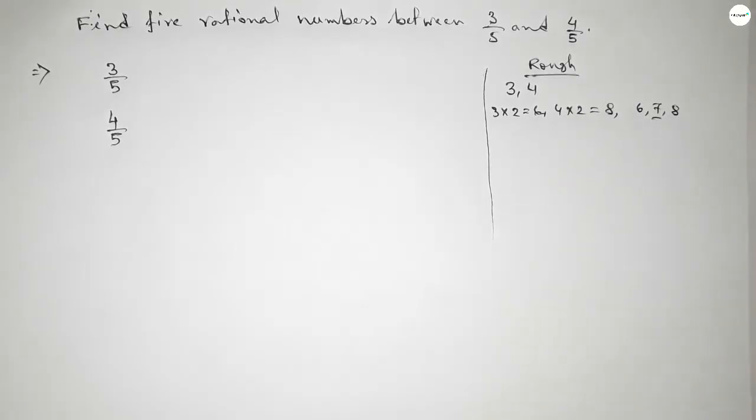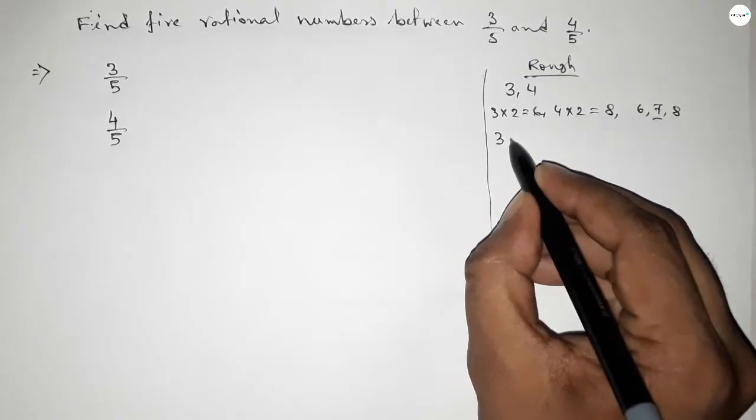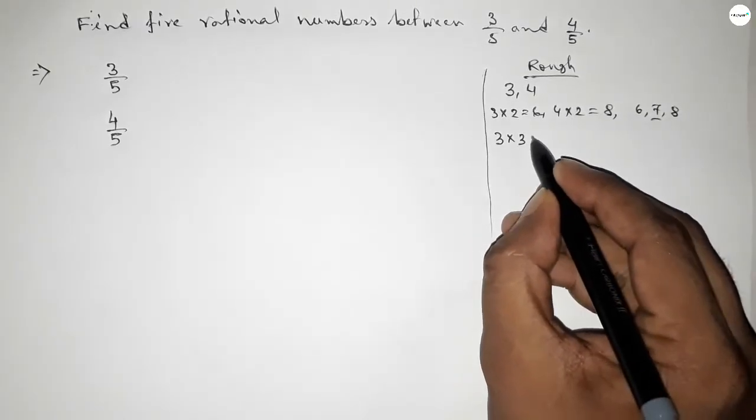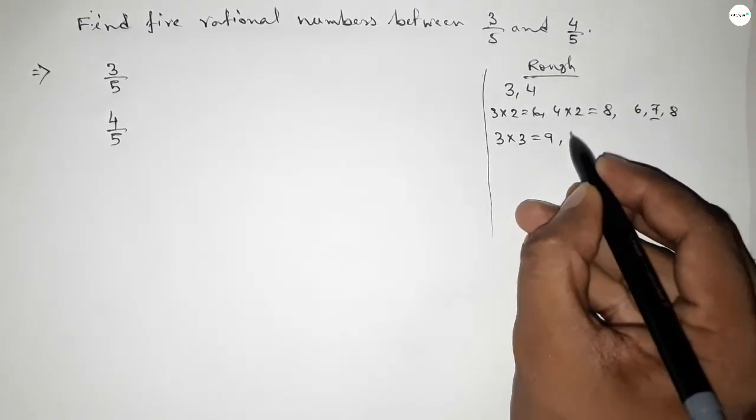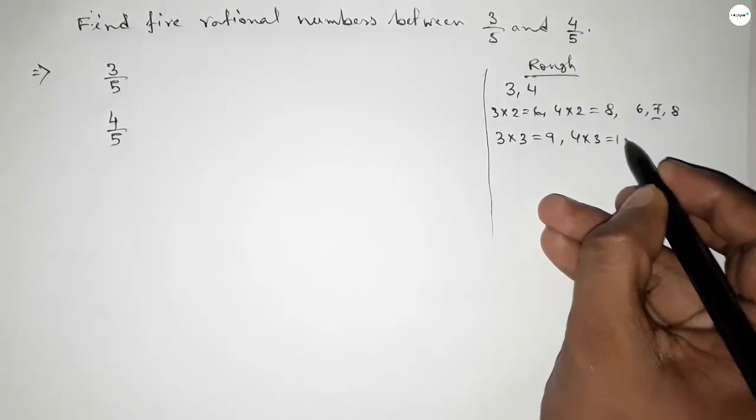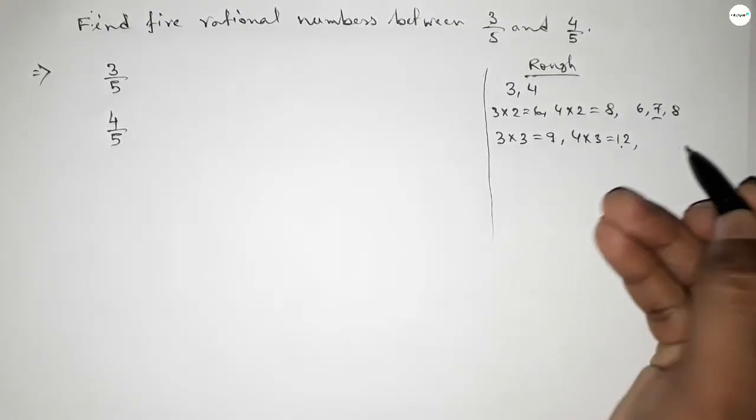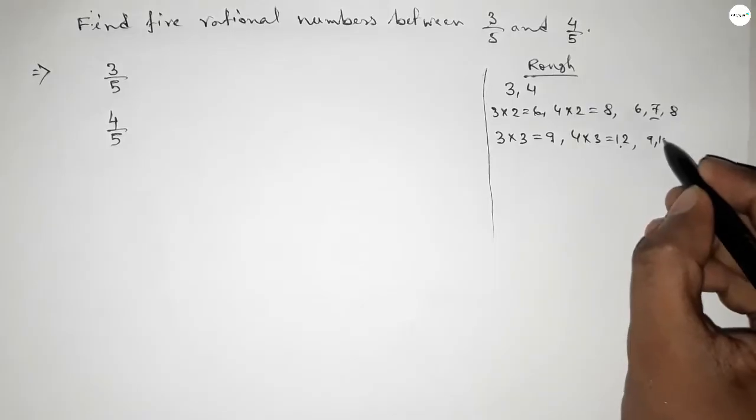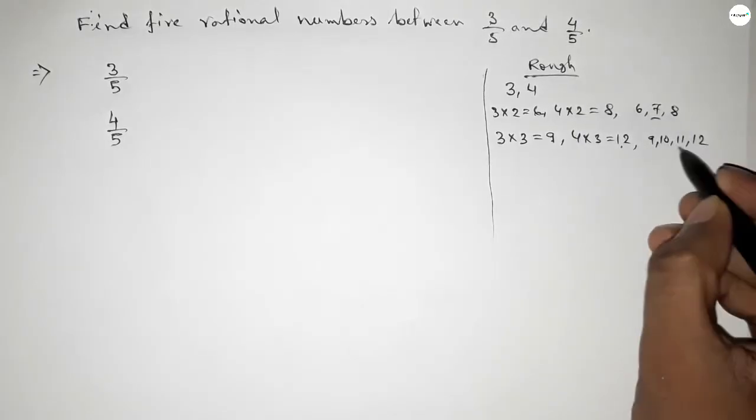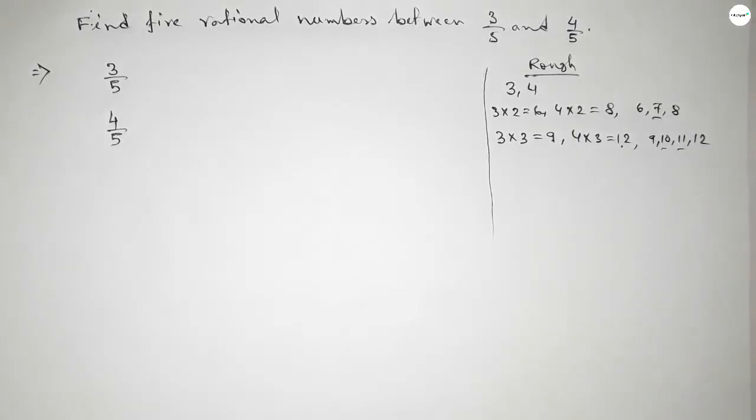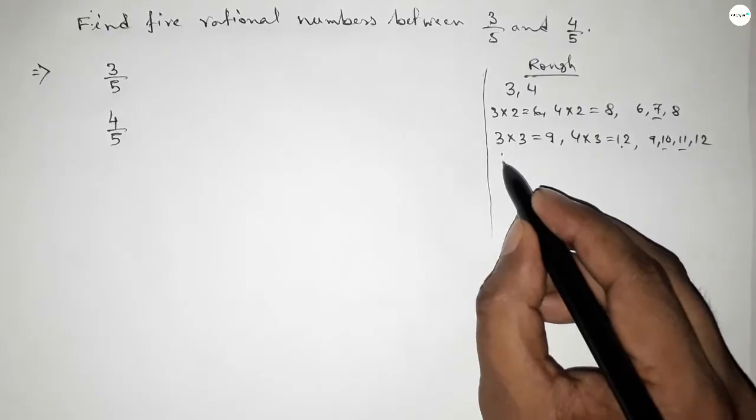Again, if you multiply 3 by 3 and 4 by 3, then between 9 to 12 we can get 2 natural numbers, but we need 5 natural numbers. Next, if you continue like this way...